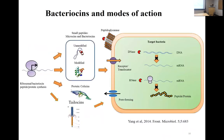There are many different classes of bacteriocins, all synthesized from ribosomes. They range from small peptides called microcins to large protein complexes. All bacteriocins have specific domains to target their receptor. Some enter into the cytoplasm of the target bacterium causing degradation of either DNA or RNA. Others have pore-forming ability or inhibit peptidoglycan synthesis, as we saw with nisin.